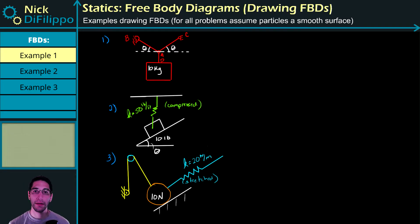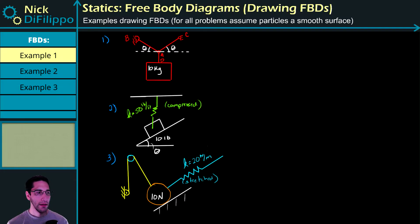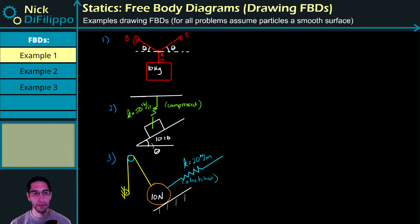In this video I would like to continue talking about free body diagrams and illustrating how to draw them with three examples. For all of these examples I will be making a couple of assumptions: all objects will be treated as particles, and if there are any contact forces the surface is going to be smooth, so we will be ignoring frictional forces.